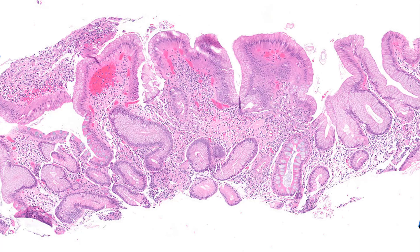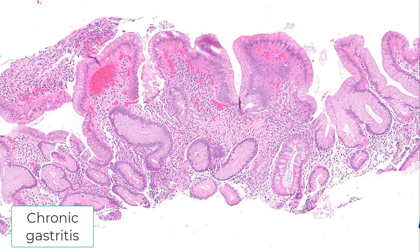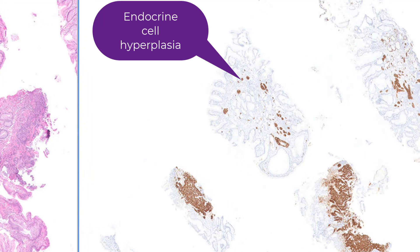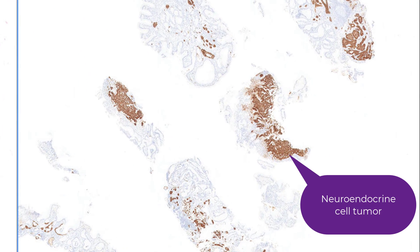Unfortunately, this endoscopist was clearly not my friend and did not provide me with a biopsy from the gastric antrum. But let's see what I can do here. This is gastric body fundic mucosa. There's chronic gastritis, there's atrophy with complete loss of parietal cells, and there's intestinal metaplasia. When I look at a chromogranin stain, not only is there endocrine cell hyperplasia as seen in this fragment, but there's also a wider mass of chromogranin-positive cells. This is a neuroendocrine tumor.